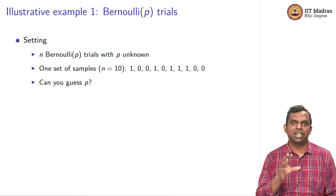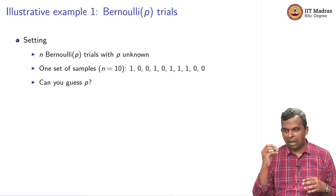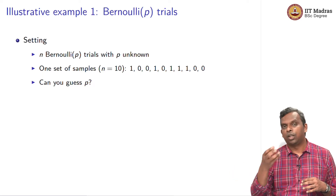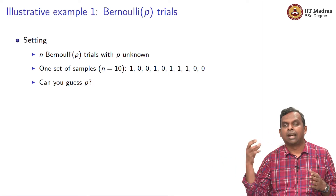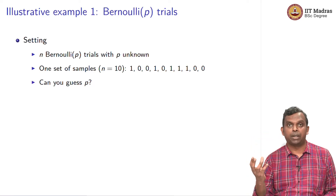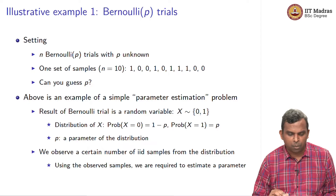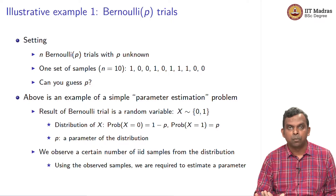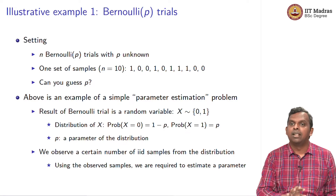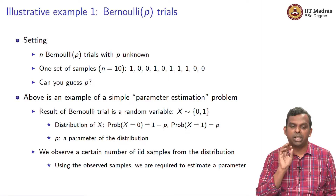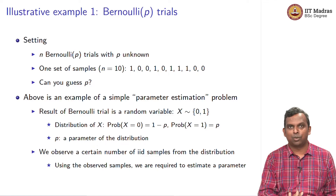That is the essential nature of a parameter estimation problem. There is a parameter of the unknown underlying distribution, you are getting IID samples from the distribution. Can you use the samples and estimate the value for the parameter? It is a simple problem. This is a typical problem — I will come back to it again and again whenever I want to illustrate an idea. The first example I will come back to is Bernoulli-P trials, so remember.